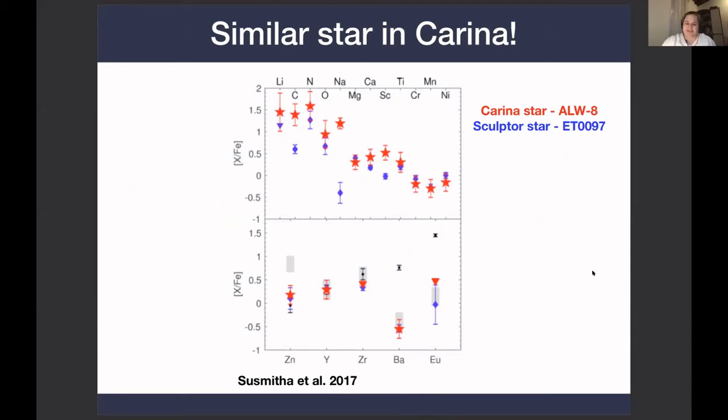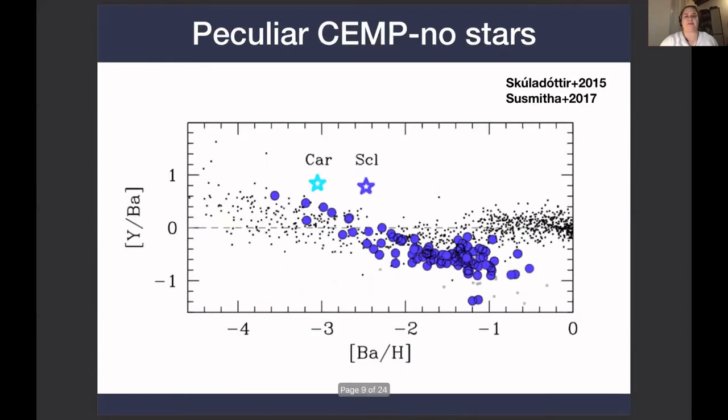To put this a little bit into context, I plot here the yttrium over barium from the Milky Way stars in black, and the general Sculptor population in blue. These carbon-enhanced stars clearly stand out in yttrium over barium, and this is not something that we typically see for CEMP-no stars in the Milky Way.